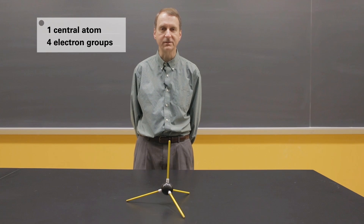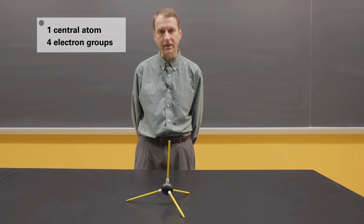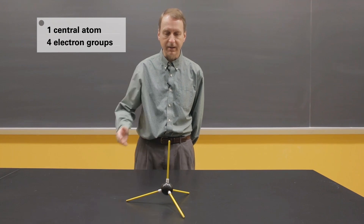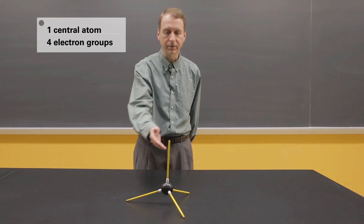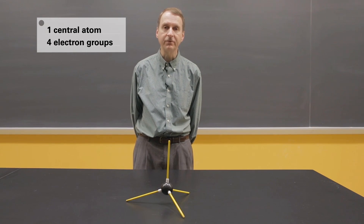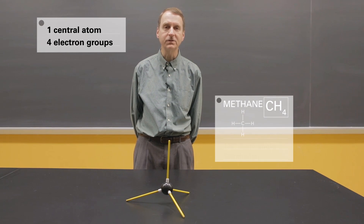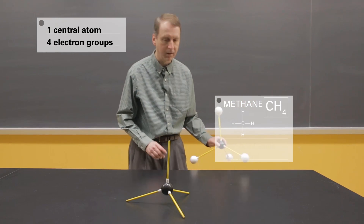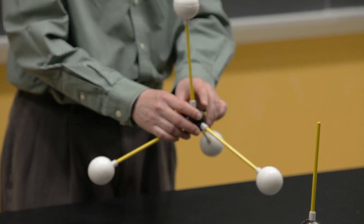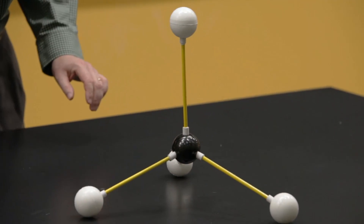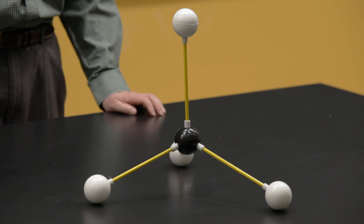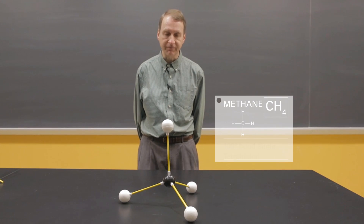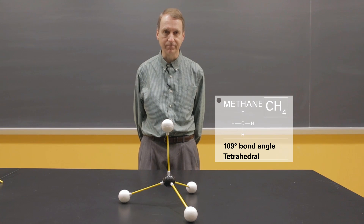When there are four electron groups around a central atom, there are three different shapes that are possible. With four electron groups, we have 109-degree bond angles. The first molecule will be methane, CH4. The Lewis structure of CH4 shows four carbon-hydrogen single bonds. Here is a model of CH4 — notice the carbon in the middle surrounded by four hydrogen atoms modeled by the white spheres. The word I would use to describe the shape of this molecule is tetrahedral. A tetrahedron is a geometrical shape that has four sides and four corners.